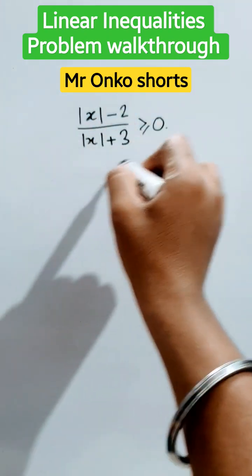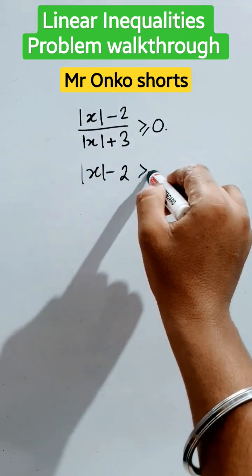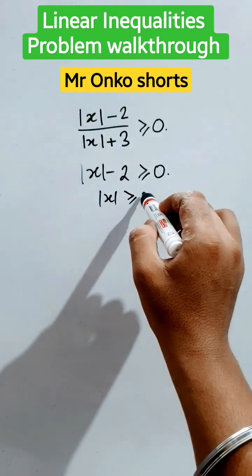So this total part must be positive when the numerator is positive, that is this. So it provides modulus x is greater than or equal to 2.